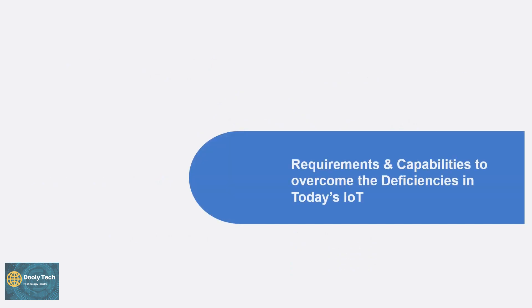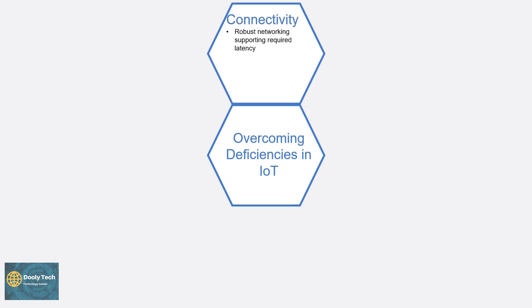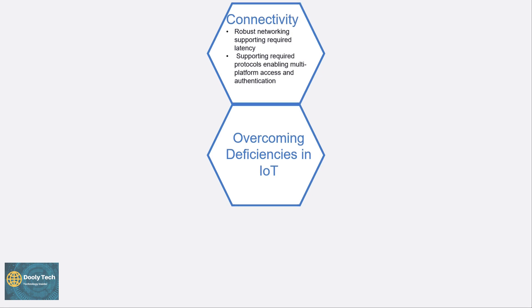Now let's look at the requirements and capabilities to overcome these deficiencies in today's IoT. The first capability required is connectivity — meaning robust networking supporting the required latency, supporting required protocols, enabling multi-platform access and authentication. If these two capabilities are achieved, we can overcome the deficiency in IoT related to connectivity.